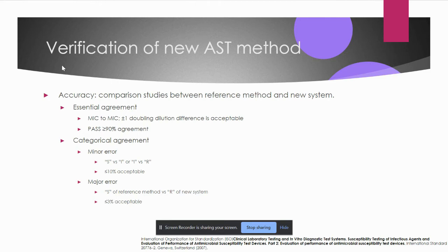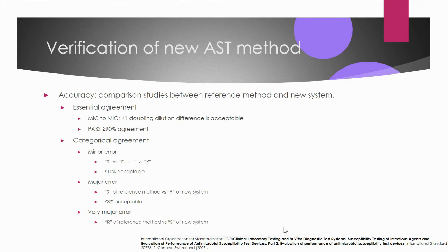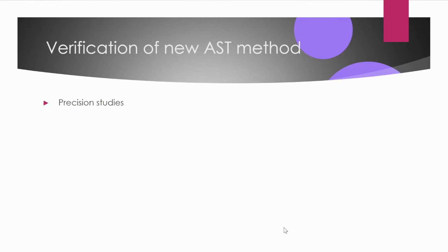For major errors, only 3% or less is allowed. A very major error occurs when the reference method shows resistance but the new system reports susceptible — meaning the drug is reported falsely susceptible. This is a very serious error that, if reported to the clinician, may result in treatment failure with serious consequences. Only 1.5% or less is allowed for very major errors.